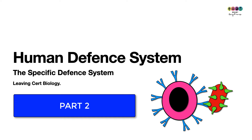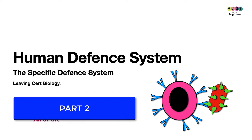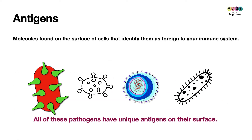This is part two of the human defense system, focusing on the specific defense system. The specific defense system is all to do with antigens — molecules found on the surface of cells that identify them as being foreign to your immune system. Pathogens, for example bacteria and viruses, all have their own unique antigens that identify them as being foreign to your immune system, so if they ever enter your body your immune system recognizes them immediately as foreign.